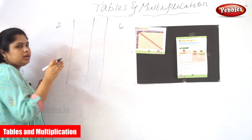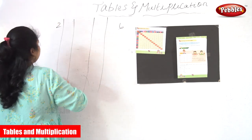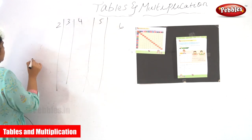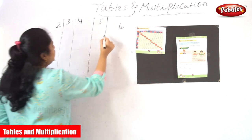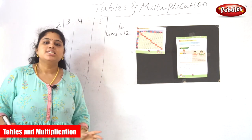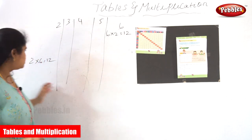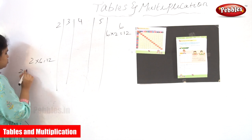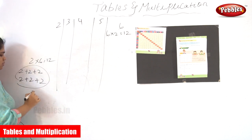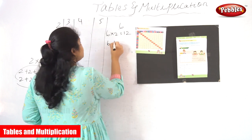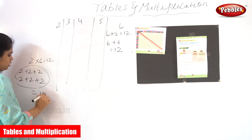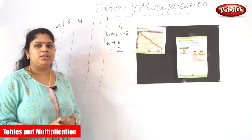How many tables have we read up to? 2, 3, 4, 5. See here — 2 into 6 is 12, and here 6 into 2 is equal to 12. It is vice versa, but the answer is the same. What is the behind concept? If 2 comes 6 times, the answer will be 12. If 6 comes 2 times, that 12 will also be the answer.